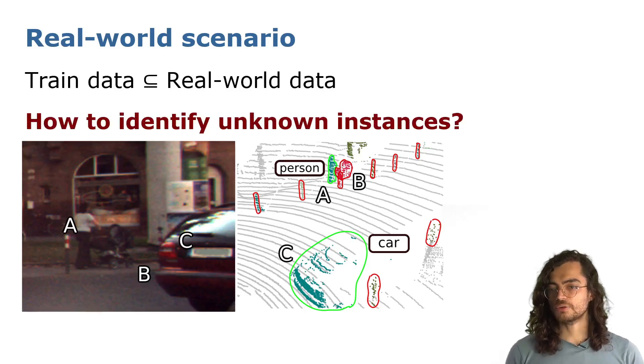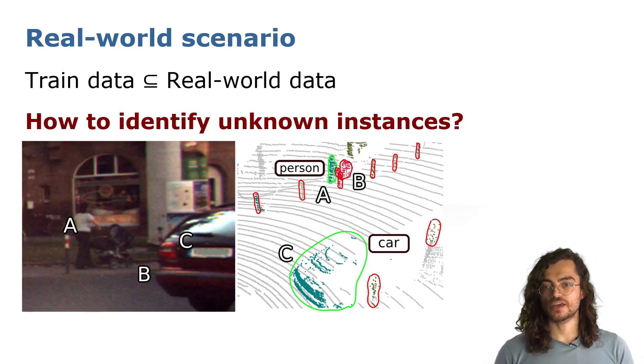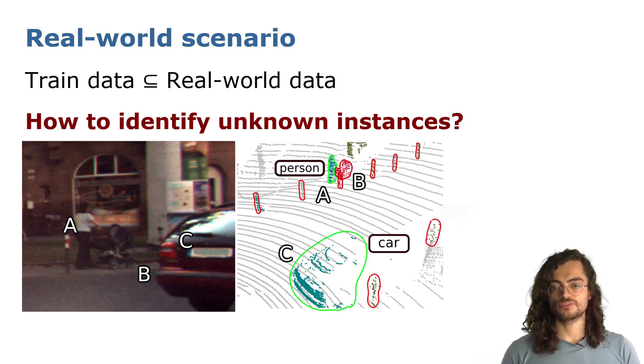But how can we identify such unknown instances to safely navigate in a real-world environment? In this paper, we propose adjoining old-fashioned computer vision methods with recent state-of-the-art self-supervised learning methods to extract class-agnostic instances from point clouds in an unsupervised manner.